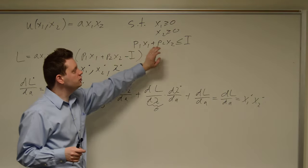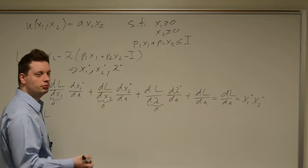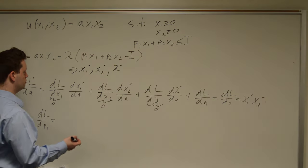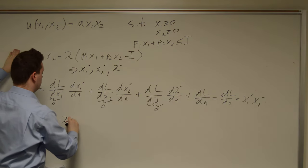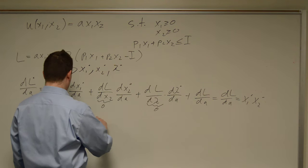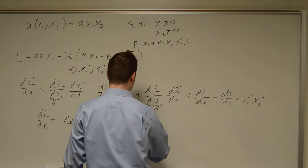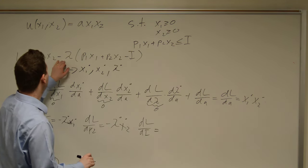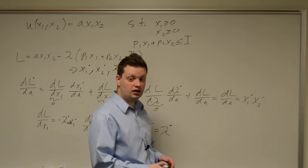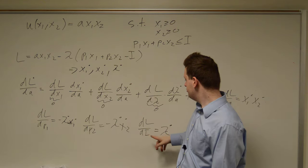Similarly, we can compute the derivatives with respect to p1, p2, and i. We have ∂L/∂p1, which is just the direct derivative, equal to −λ star·x1 star. Similarly, ∂L/∂p2 is equal to −λ star·x2 star. And ∂L/∂i equals λ star (from the −λ·(…−i) term, the derivative with respect to i gives +λ, so just λ star). These will have actual numerical values once the parameters are given specific numbers.